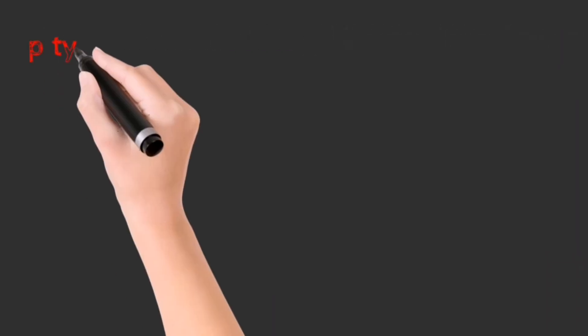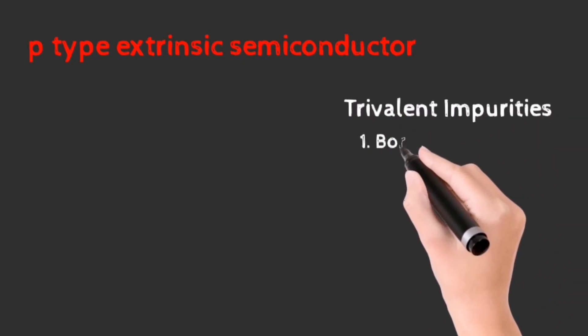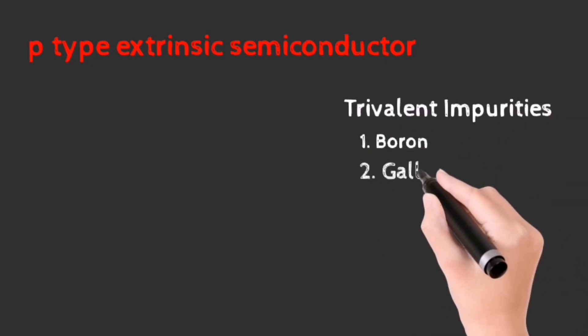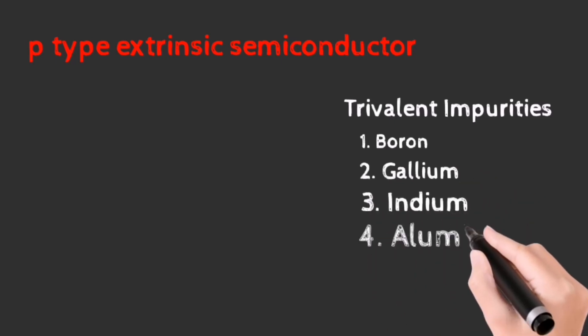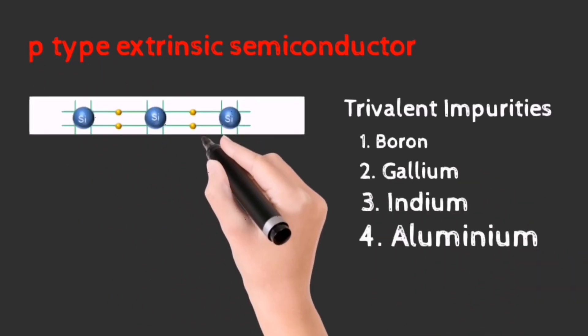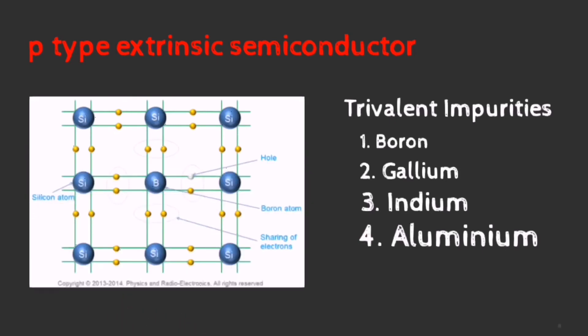Let's now have a look at how P-type extrinsic semiconductors are formed. P-type semiconductors are formed when trivalent impurity is added to a pure silicon crystal. Here, we have added boron. As we know, group 3 elements have 3 electrons in its valence shell. So the 3 electrons present in the valence shell of boron form 3 covalent bonds with the silicon atom, but still a vacancy or hole is created due to the absence of the 4th valence electron in the boron atom.